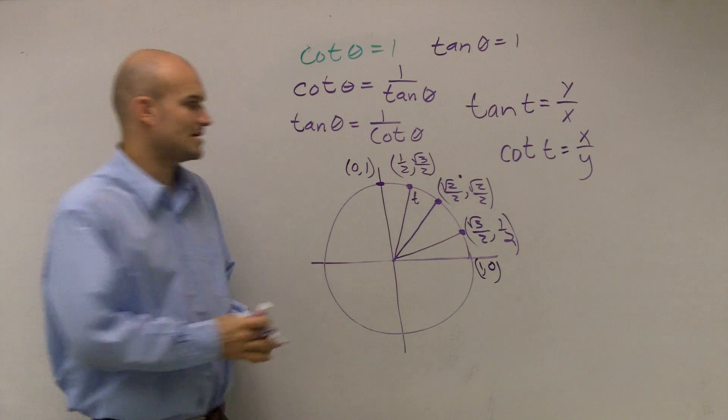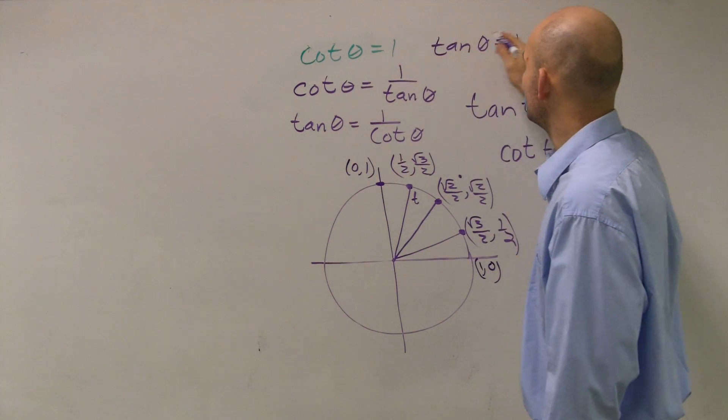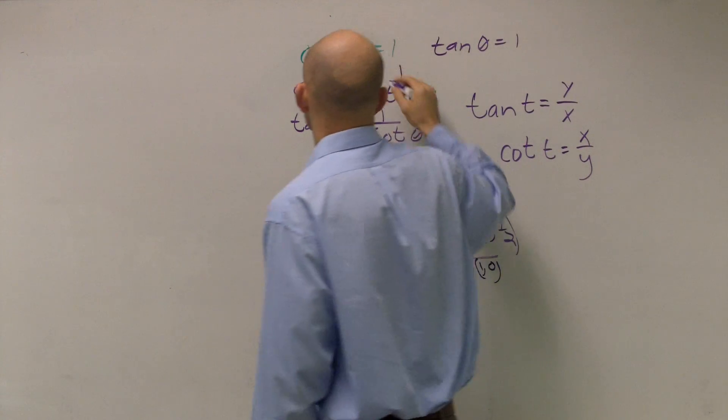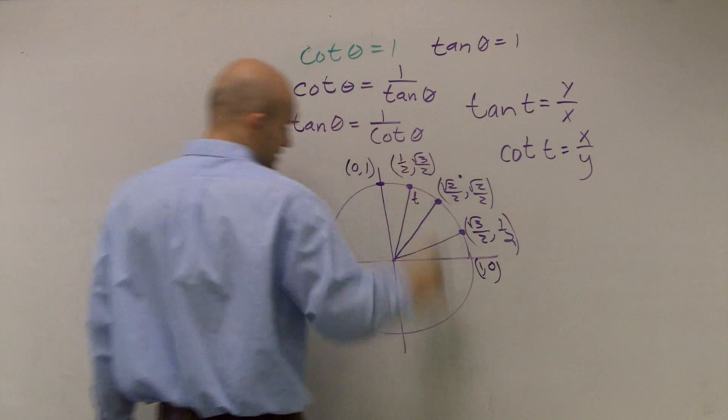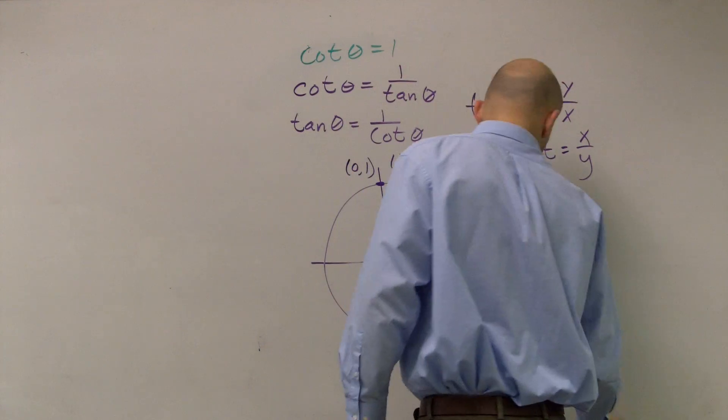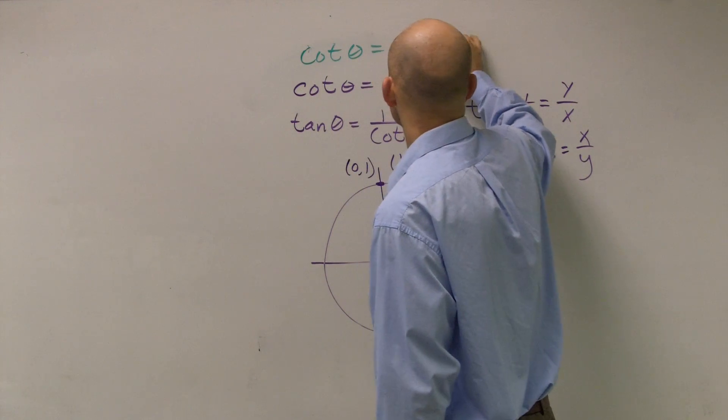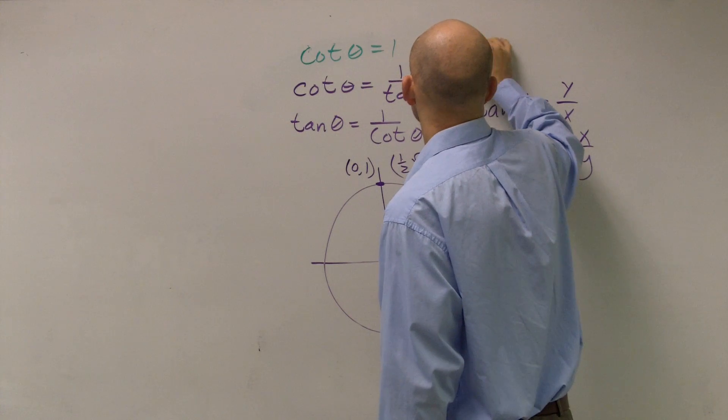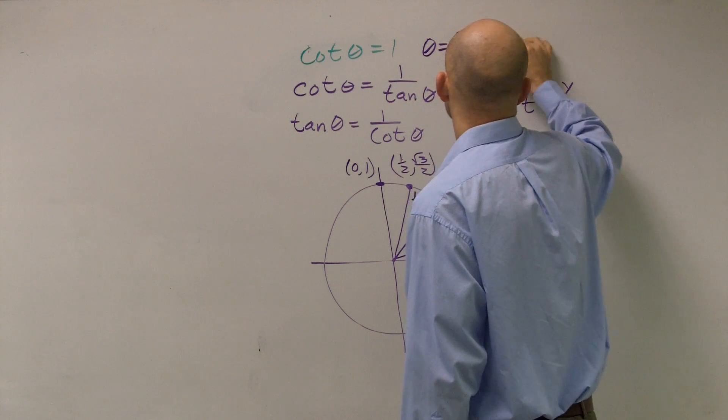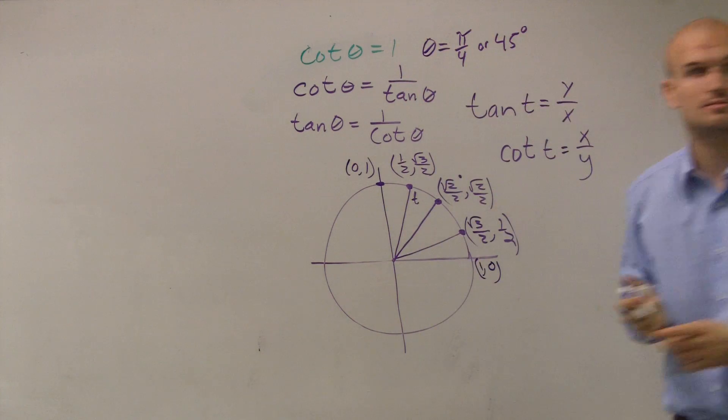So therefore, cotangent of beta is equal to 1, and therefore my theta is equal to pi over 4, 45 degrees. Make sense? Yeah, nice. That's all right.